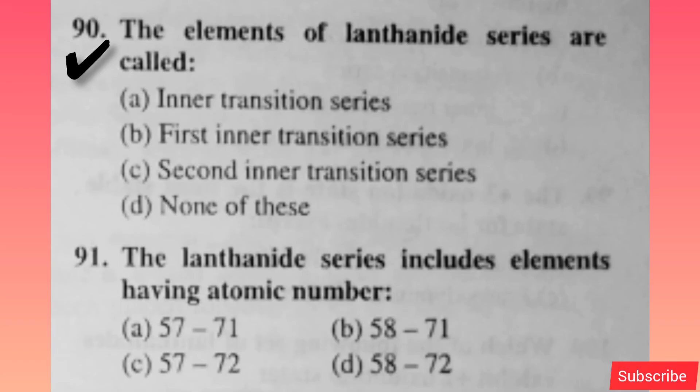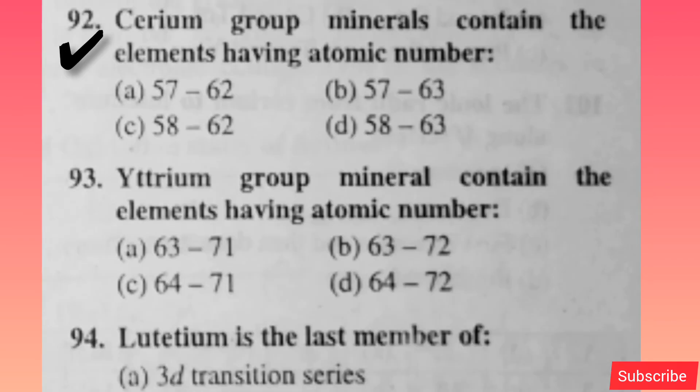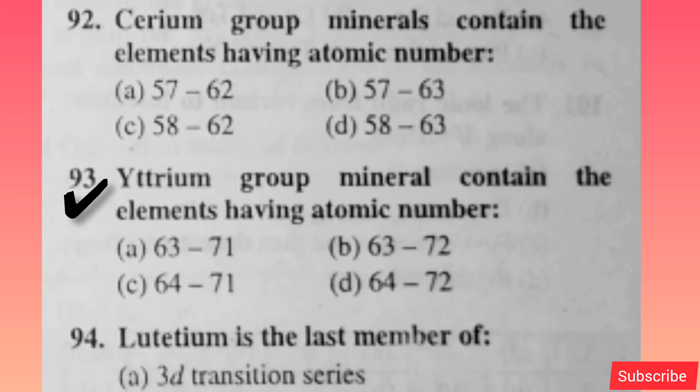The elements of the lanthanide series are called — option B is correct. The lanthanide series includes elements having atomic number — option B is correct. Cerium group minerals contain elements having atomic number — option C is correct. Yttrium group minerals contain elements having atomic number — option A is correct.